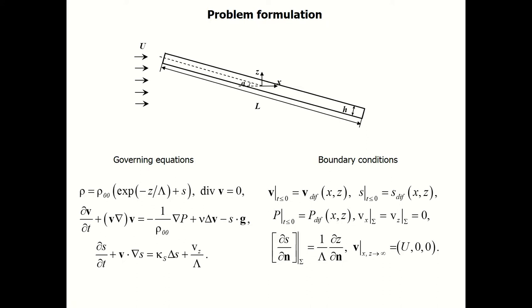The governing equations: we consider the equation of state, incompressibility equation, Navier-Stokes equations with accounting for gravity in Boussinesq approximation, and diffusion equation. As a boundary condition, we consider no-slip and no-flux boundary conditions for velocity and salinity. As initial condition, we consider the fields of diffusion induced flows. When we consider the movement of the plate, the initial state is diffusion induced flows which is formed on the immovable motionless obstacle.